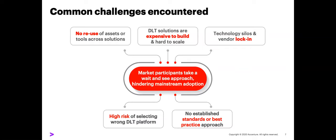There are technology silos and vendor lock-in. We see a lot of solutions in the marketplace trying to capture a certain market, creating pockets of innovation and saying everything should be done in one specific technology — we wanted to avoid that. We also saw a high risk of selecting the wrong platform, which is actually foundational to how we came up with Hyperledger Cactus. And there weren't established best practices, so conformance with the DLT reference architecture was not easy — everyone had their own interpretation.